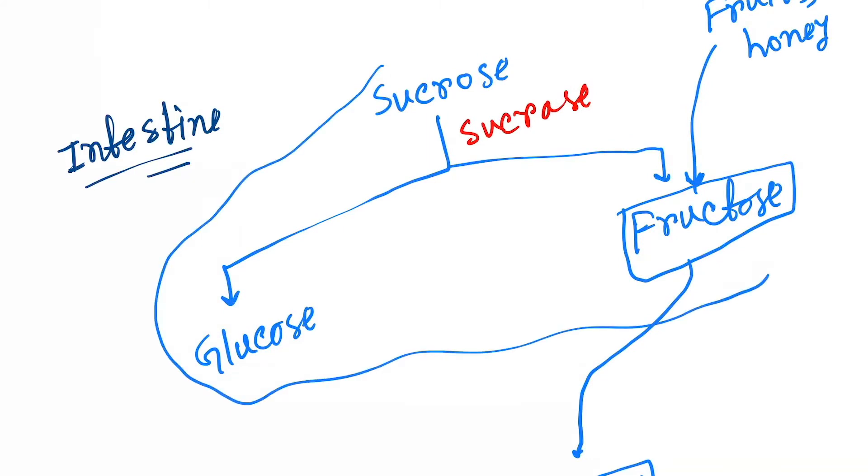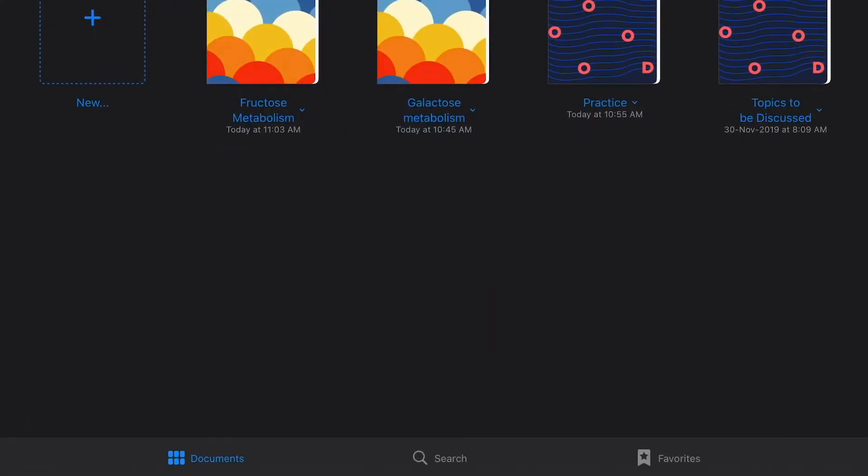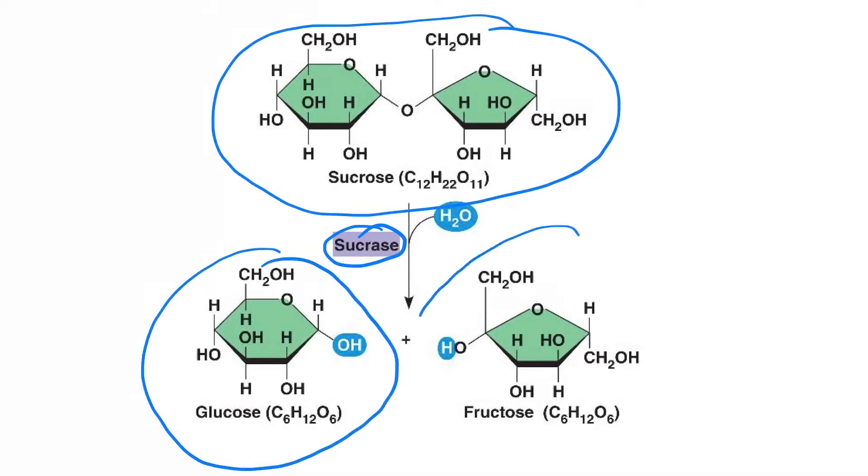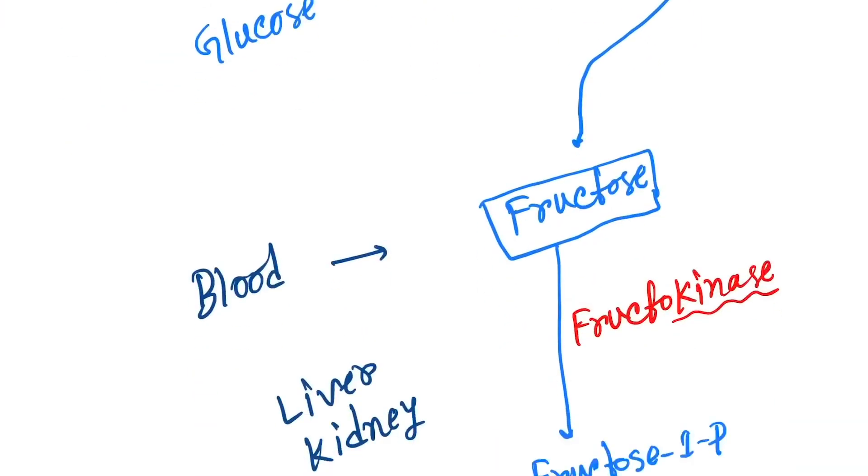Here you can see this whole structure is sucrose. When sucrase enzyme acts, it will cause breakdown into glucose and fructose. The sucrase enzyme acts on this bond and this will cause formation of glucose and fructose.